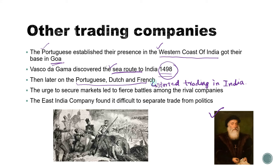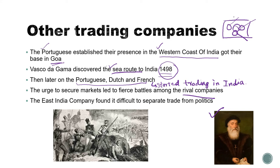The desire to secure markets led to fierce battles among rival companies. For example, if you are in a classroom with three people and only one pizza, one burger, and one pasta — a rival battle breaks out over who gets what. In the same way, these companies were battling over trade in India.